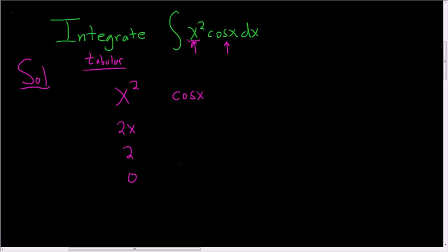And then we keep integrating cosine x. Sine x — and that checks, because if you take the derivative of sine, you get cosine. And then negative cosine x — that checks, because the derivative of cosine is negative sine, and we already have a negative — and then negative sine x.